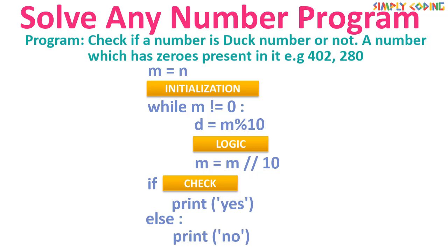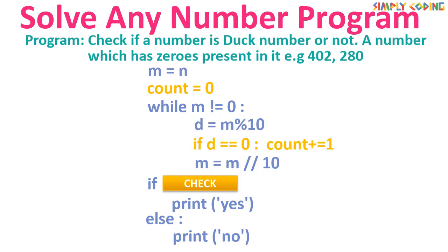Next is the duck number — a number which has zeros present in it, like 402 or 280. You check digits to see if any one is zero. This logic can also count occurrences of any digit. In initialization set `count = 0`. In the loop, if `d == 0` increment count. In the check, if count > 0 it is a duck number. You can change the digit in the if-expression to check for any digit.